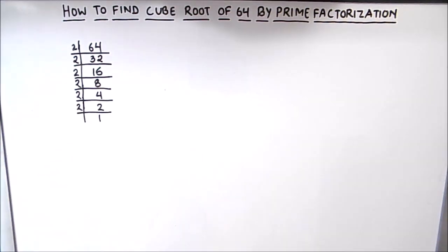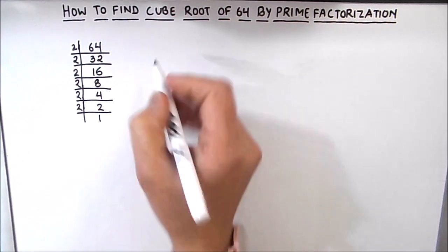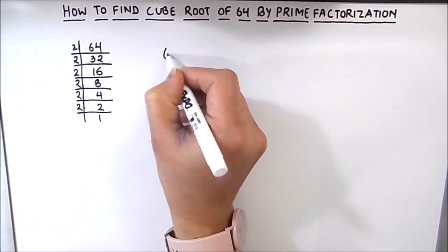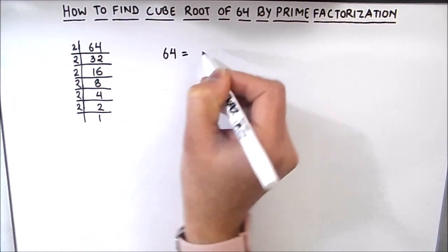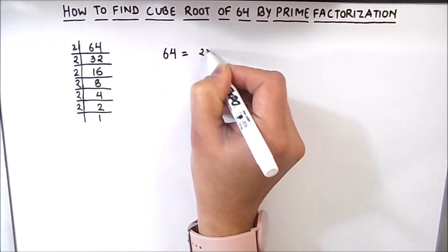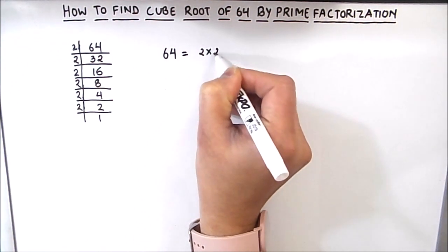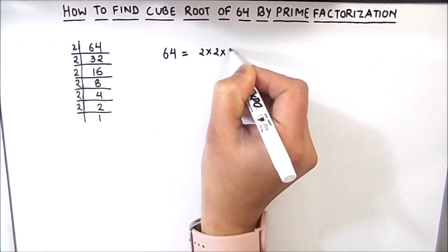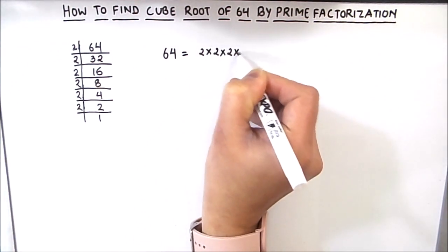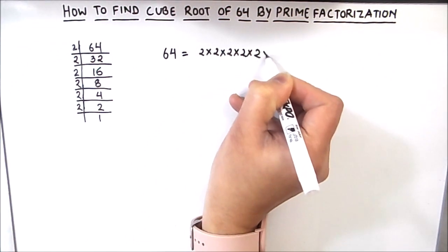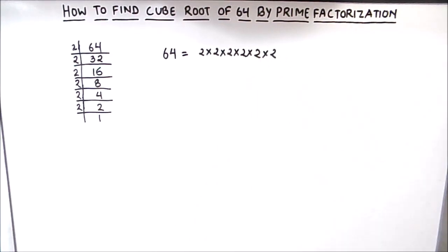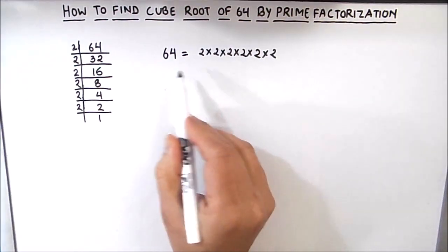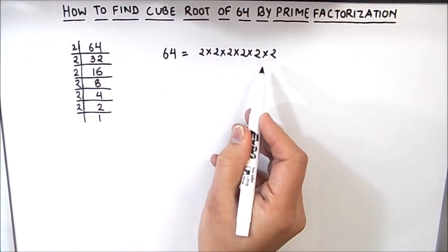We have now divided 64 fully. We can write 64 as the product of its prime factors: 2 × 2 × 2 × 2 × 2 × 2. Now we are going to find the cube root of this number.